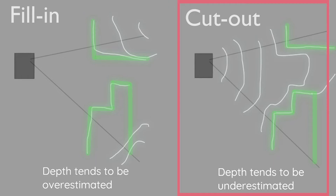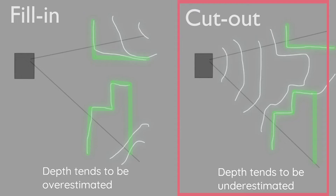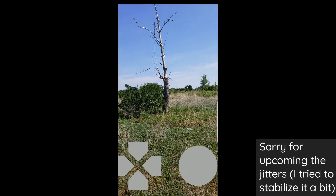If it were set up the other way — assuming empty space — you would end up with no occlusion and objects would fly through walls much more easily. Right now it's set up to occlude very early on. The code itself is very straightforward.